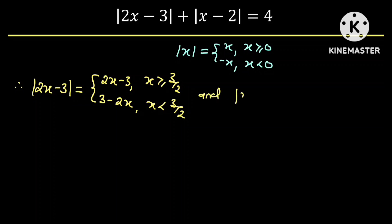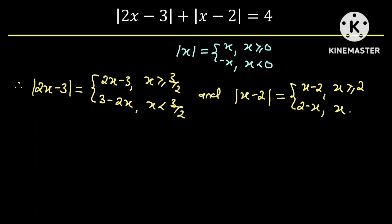And the absolute value of x minus 2 is equal to x minus 2 if x is greater than or equal to 2, or 2 minus x if x is less than 2.